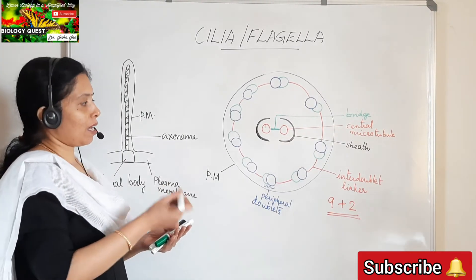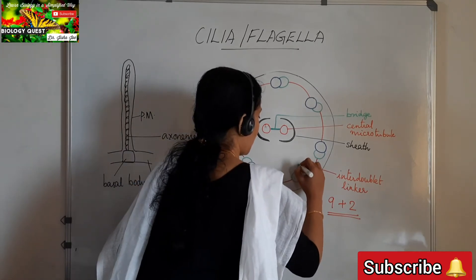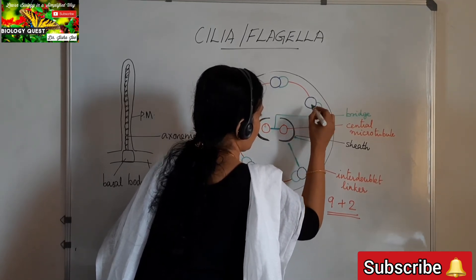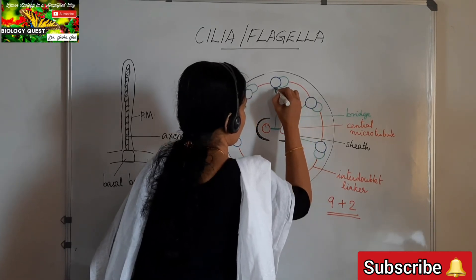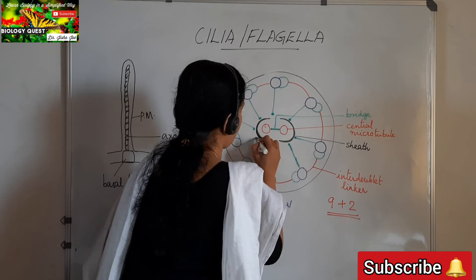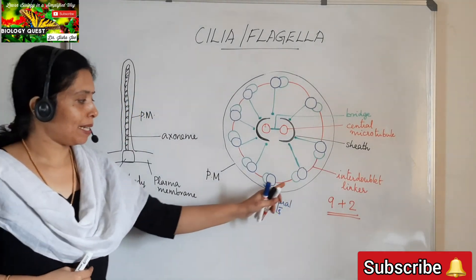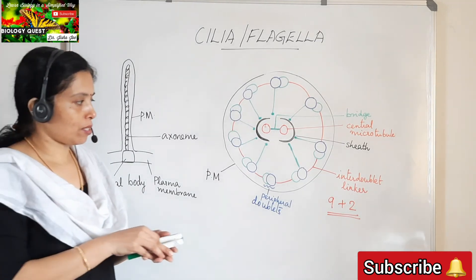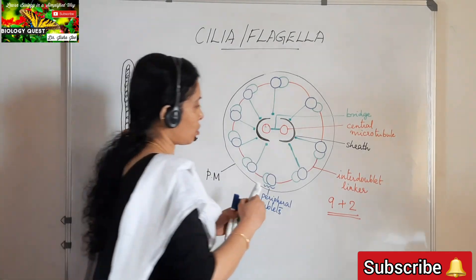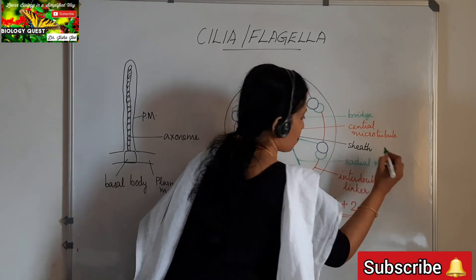In addition to the interdoublet linker, the peripheral doublets are also connected to the central sheath by means of radial spokes. So each peripheral doublet is connected to its neighbor via an interdoublet linker, and to the central sheath via radial spokes.